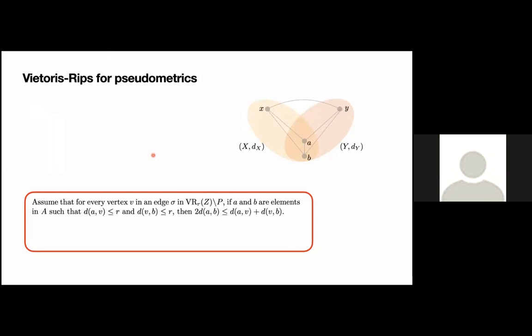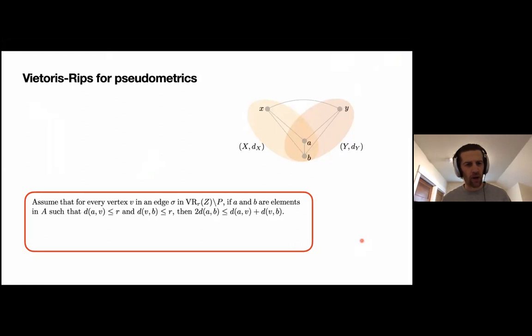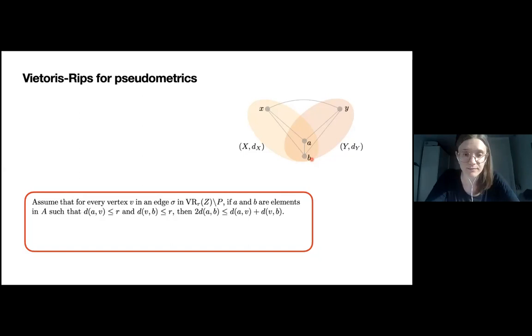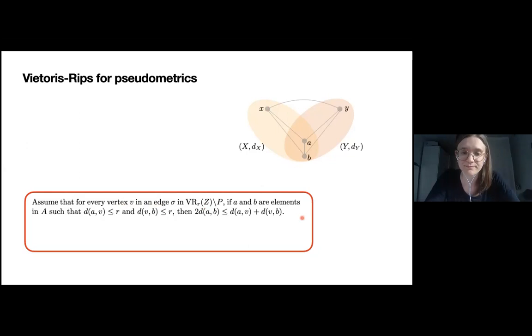Now we have time for questions. Francesca, I wanted to ask about the last slide. So sigma here in the picture — you're thinking of sigma as the edge between x and y? Yes, sorry, I think I forgot to mention it. And so v is going to be either x or y? Yes. Those are actually the simplices in K minus P, which are the ones we are most interested in, as I stressed before, and this is exactly the case here.